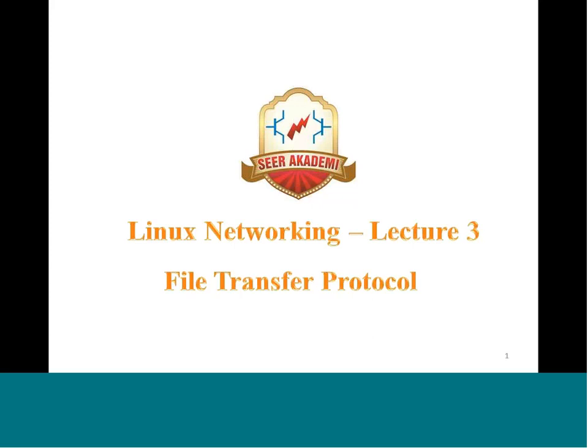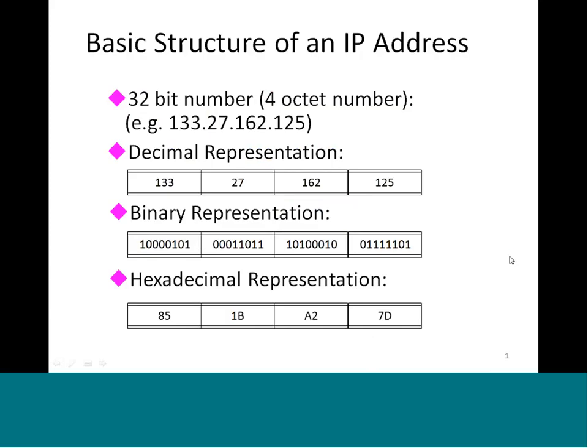Before we start talking about FTP itself, I want to give a recap from last lecture. As you know, we finished the last lecture on IP addressing. So let us look at what we learned. We learned the basic structure of an IP address, which is a 32-bit number comprised of 4 octets. A simple example would be 133.27.162.125.